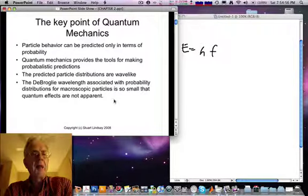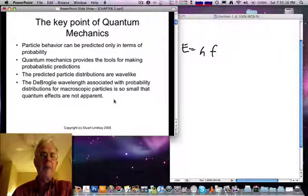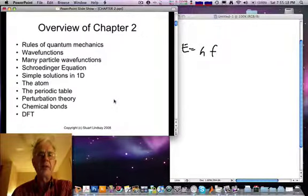Quantum mechanics provides the tools for doing this. The distributions are wave-like, as you saw in that movie, and the wavelength associated with those particles, originally first calculated by de Broglie for a free electron, are so small that quantum effects are usually not apparent. But this is a class in nanoscience, so they'll matter to us.